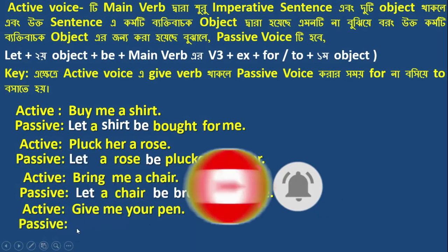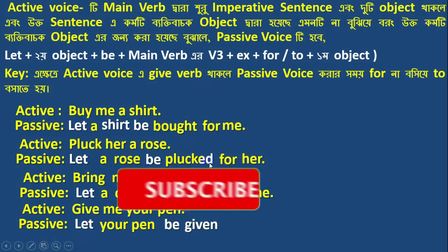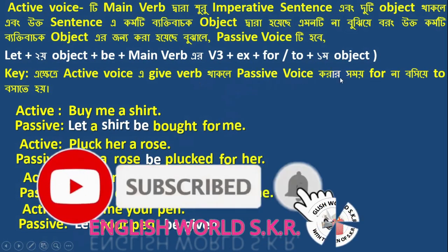Passive version: 'Let your pen be given to me.' The main verb is 'give', past participle is 'given'. Because the verb is 'give', we use 'to' instead of 'for'. This is the special rule for the passive verb form of 'give'.